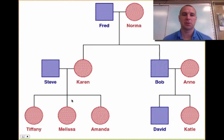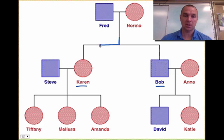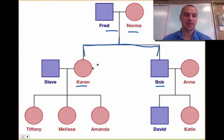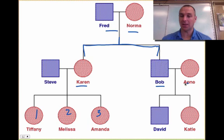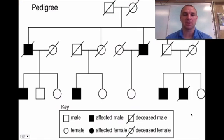Let me go through a few examples. Here, Fred and Norma married — that's a man and a woman. They had two children: Karen, who is a girl, and Bob. Steve married Karen and they had three children, all girls. Bob married Ann and they had two children. This gives you an idea of what a pedigree looks like.